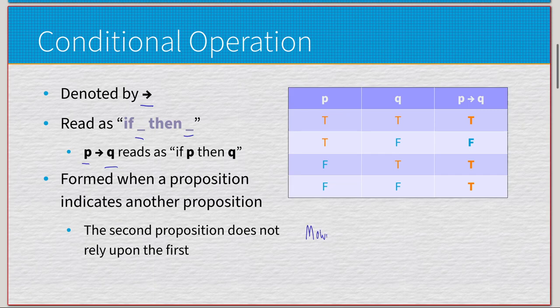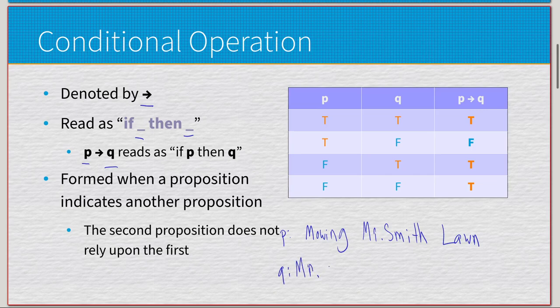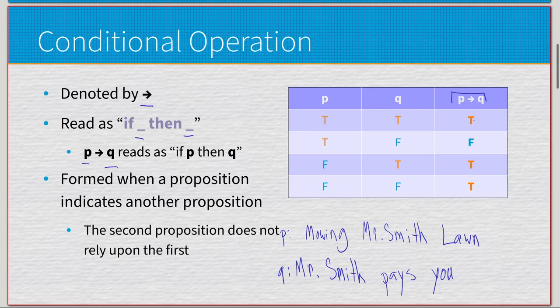Let's say we have some proposition about mowing a lawn. I think it's Mr. Smith in the example they use. We know Mr. Smith's lawn. Let's say P is mow Mr. Smith's lawn, and Q is Mr. Smith pays you. Now imagine this is just an isolated bubble, just P implies Q.